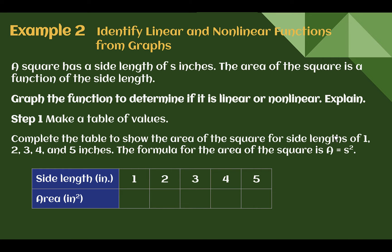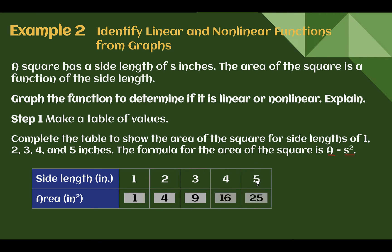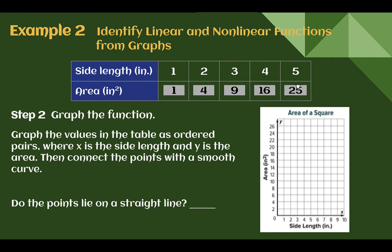Example 2: A square has side lengths of s inches, and the area of the square is a function of the side length. Graph the function to determine if it's linear or non-linear, then explain. First, make a table of values. The area of a square is s squared. For side lengths 1, 2, 3, 4, and 5: the areas are 1, 4, 9, 16, and 25. Using these values, let's graph them.